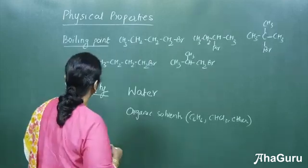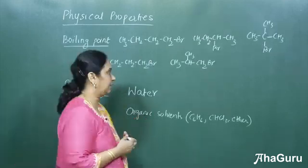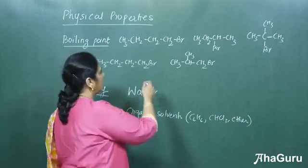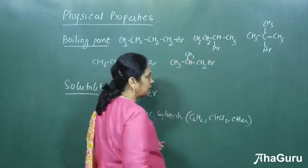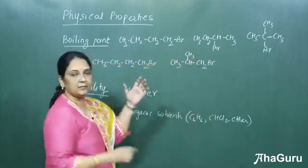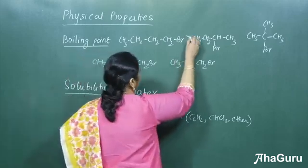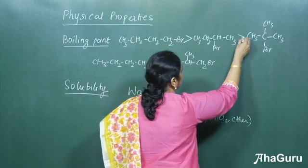Now, we will see the boiling point of isomeric haloalkanes. Here, we have position isomerism where the halogen has taken different positions. We can see with branching, there is an increase in branching. When there is an increase in branching, the boiling point will decrease.